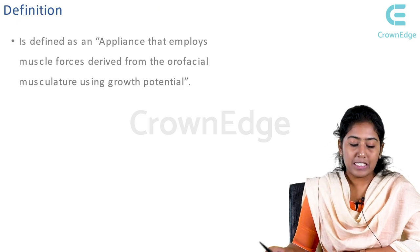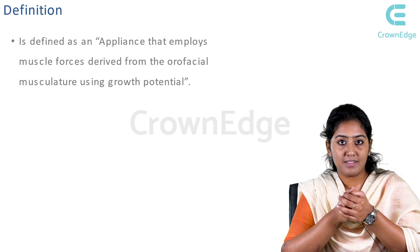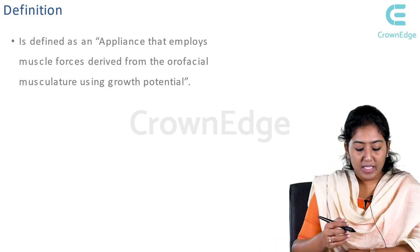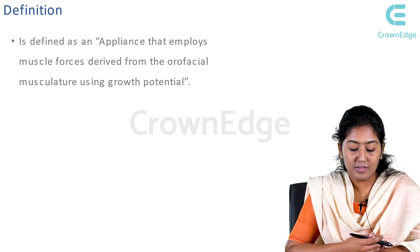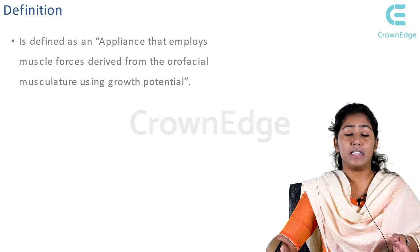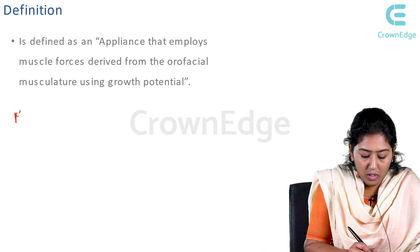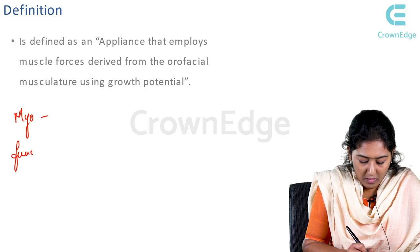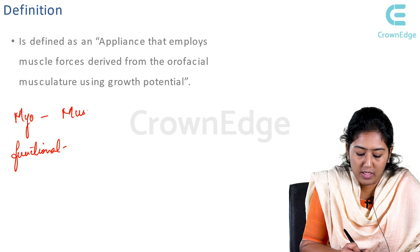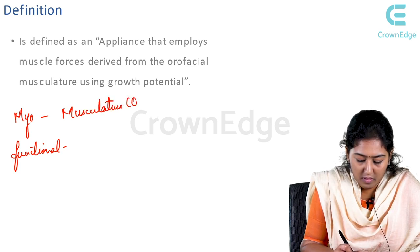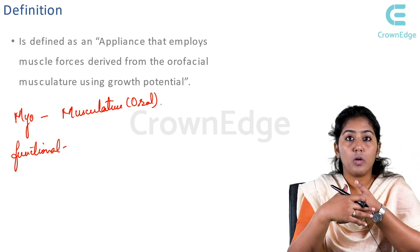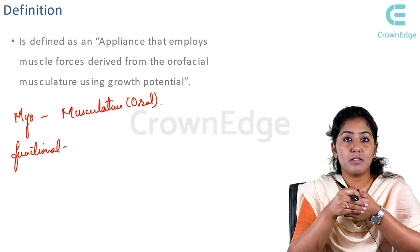Before starting with the definition and classifications of myofunctional appliances, let me make it very simple. What does the word 'myofunctional appliance' mean? It is defined as an appliance that employs the muscle forces derived from the orofacial musculature using the growth potential. 'Myo' means musculature — we are using the oral musculature — and 'functional' refers to the function we are going to employ using those muscles.